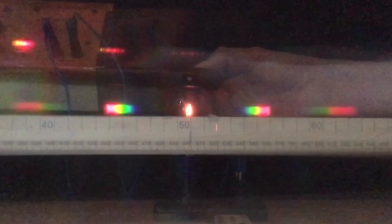You can see that the first order infrared fringe is well beyond the first order visible light red fringe.